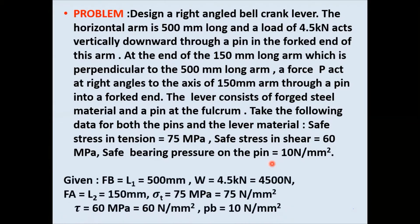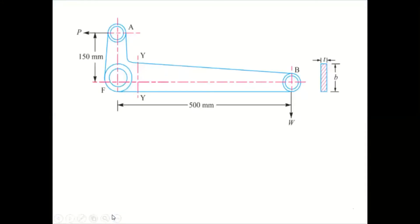Given data: length of load arm is 500 mm, W is 4500 Newton, length of effort arm is 150 mm. Permissible tensile stress is 75 N/mm², permissible shear stress is 60 N/mm², and bearing pressure is 10 N/mm². The sketch shows W, L1, P, L2, and section YY where bending failure of the lever will occur.